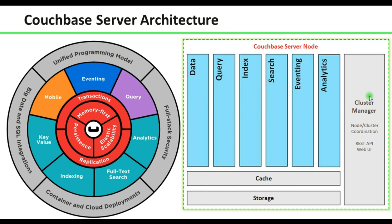This is a Couchbase node. The Cluster Manager is running on all Couchbase nodes — if you have four nodes in the cluster, the Cluster Manager will be up and running on all four. The list of services you can opt for on a Couchbase node are: Data, Query, Index, Search, Eventing, and Analytics. Suppose you want to use only data, query, and index nodes — you can select only those and ignore the rest.